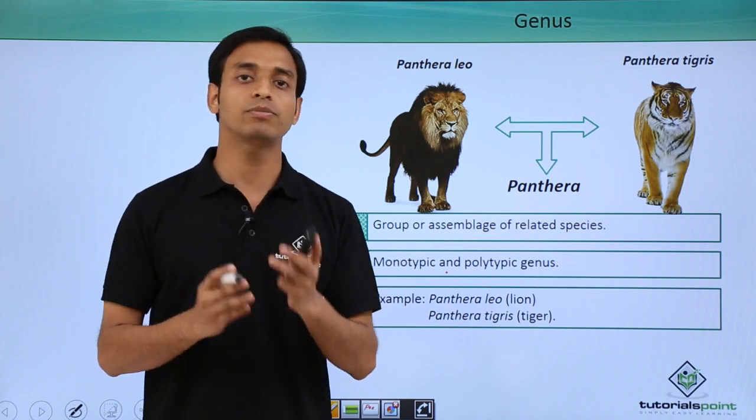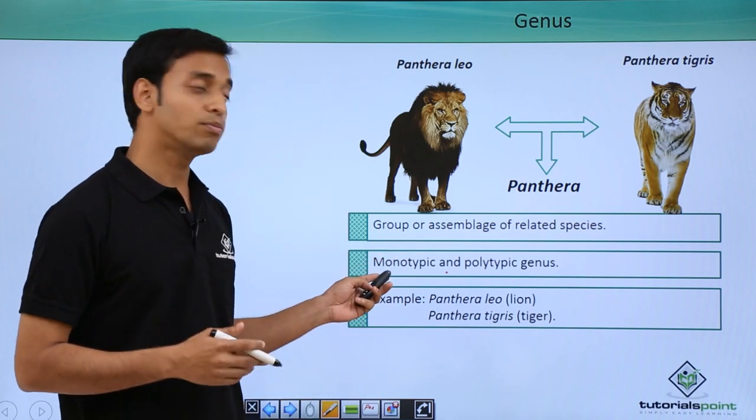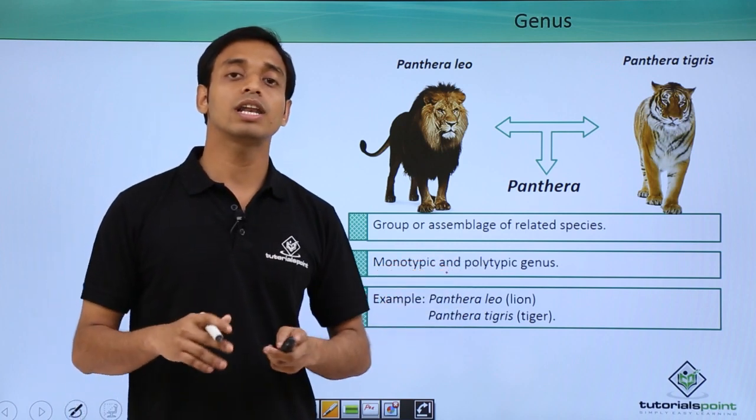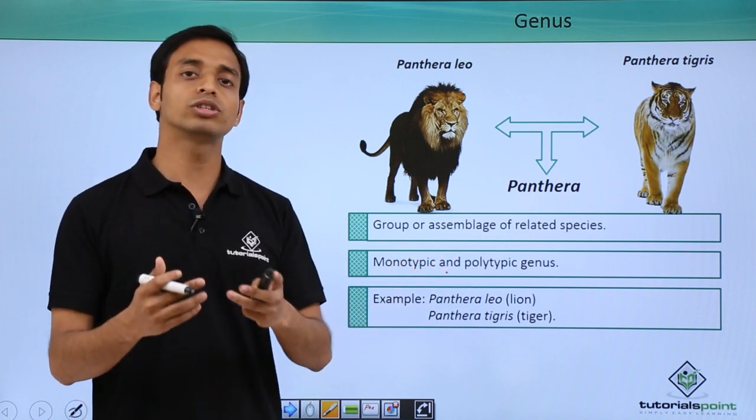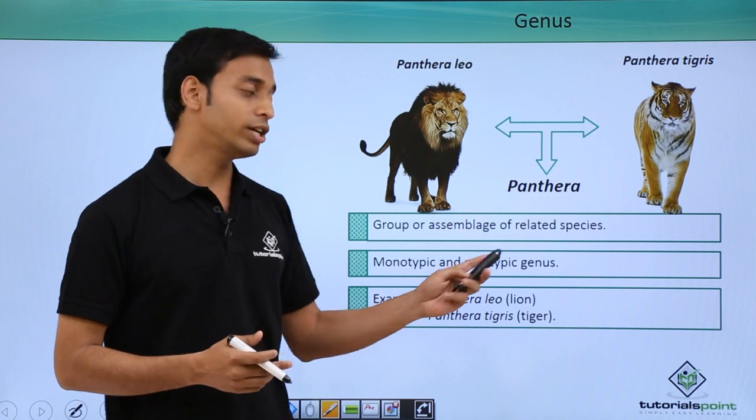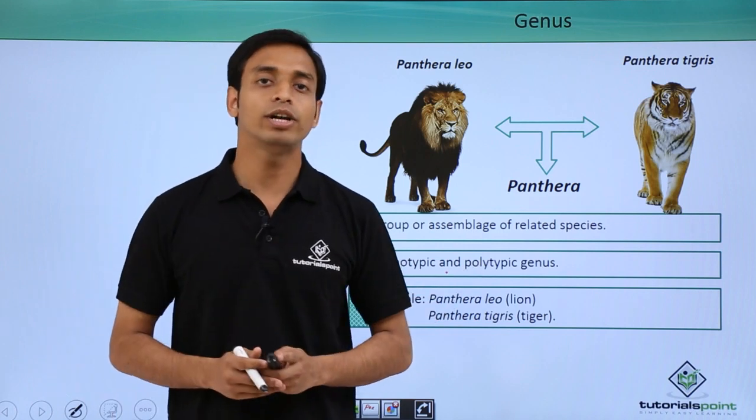Some genus have only single species and such type of genus is known as monotypic genus, whereas the others which have more than one species is known as polytypic genus.